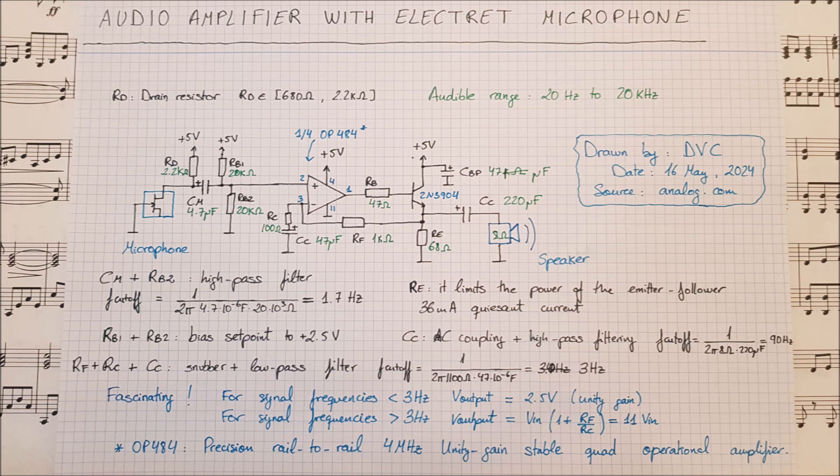For signal frequencies lower than 3 Hz, you have a voltage output of 2.5 V — your base level. If the signal frequency is above 3 Hz, which is what you expect from the audible range as discussed earlier, then you have a voltage output that is 11 times the voltage input — so you have gain. It's not amplifying the base level, only the signal. If you had used a conventional non-inverting amplifier, you would be amplifying the base level and it would be saturating. So this is really smart.